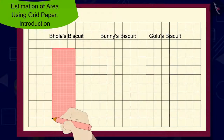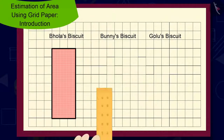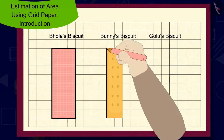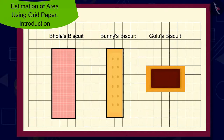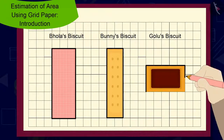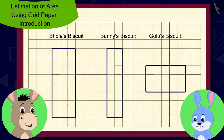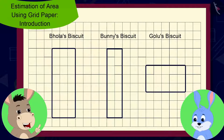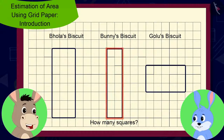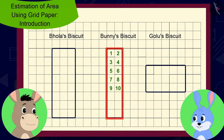Bhoola made the outlines of all three biscuits with a pencil on the grid paper. 'Bunni, can you tell me how many squares are there in the shape of your biscuit?' Bhoola asked. Bunni quickly counted the number of squares and said, 'Sixteen squares.'